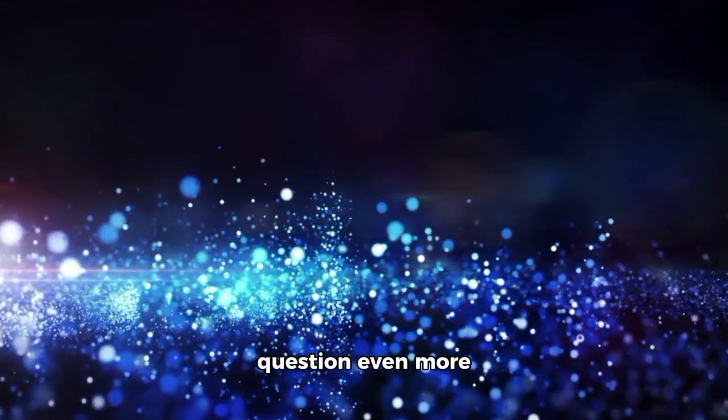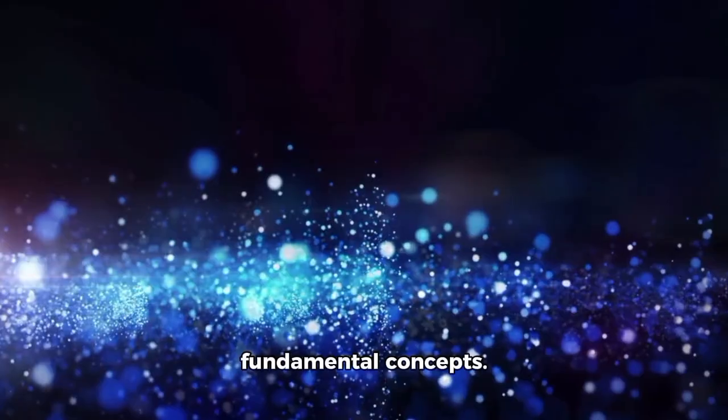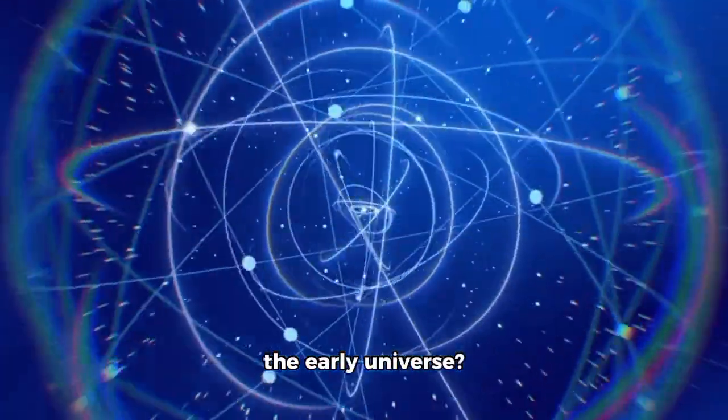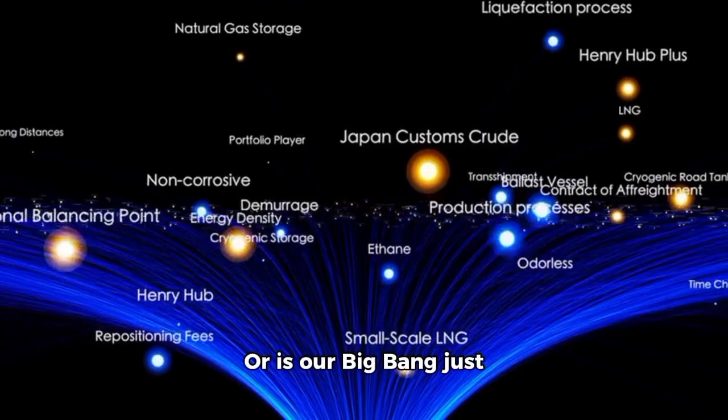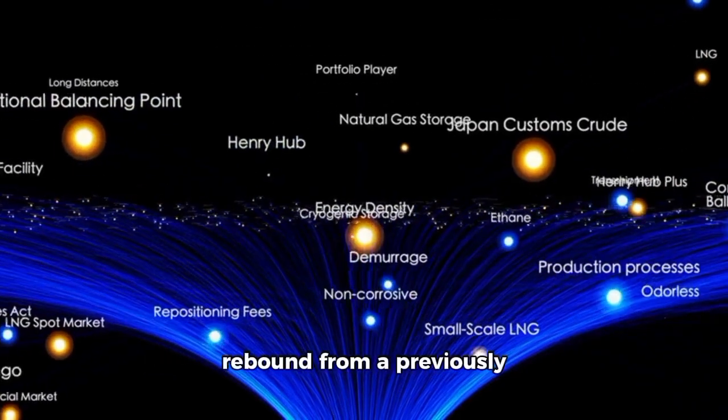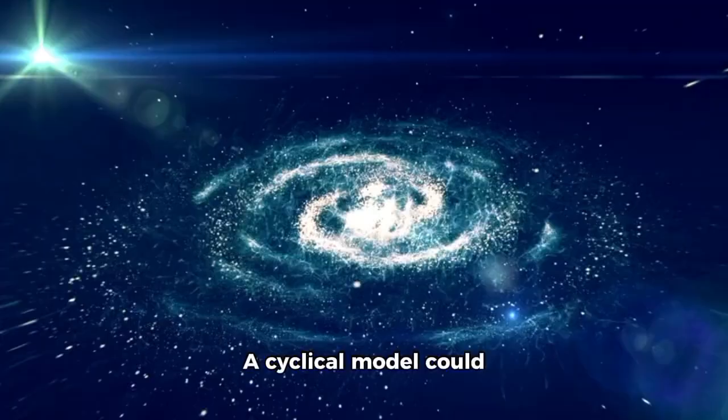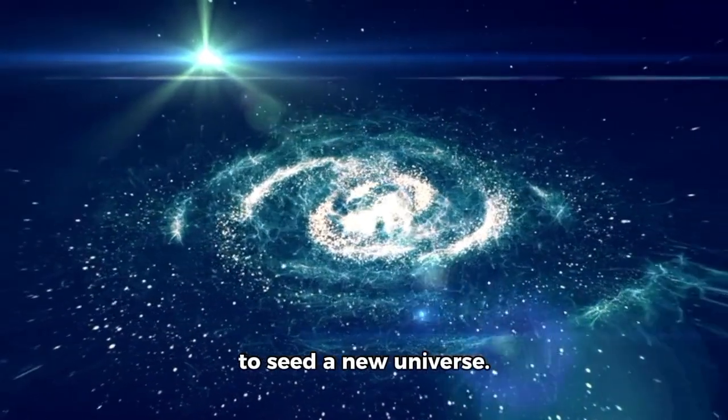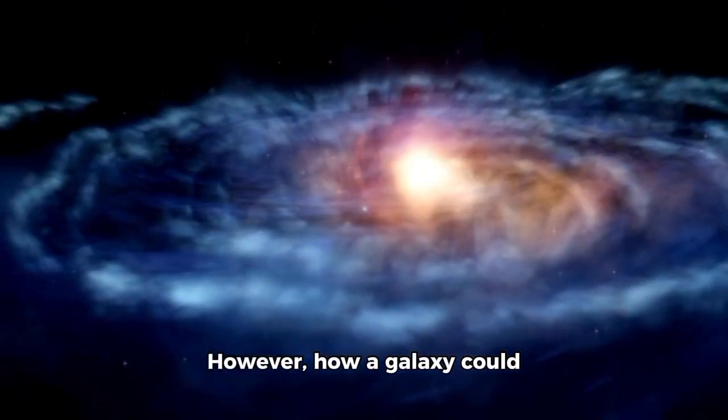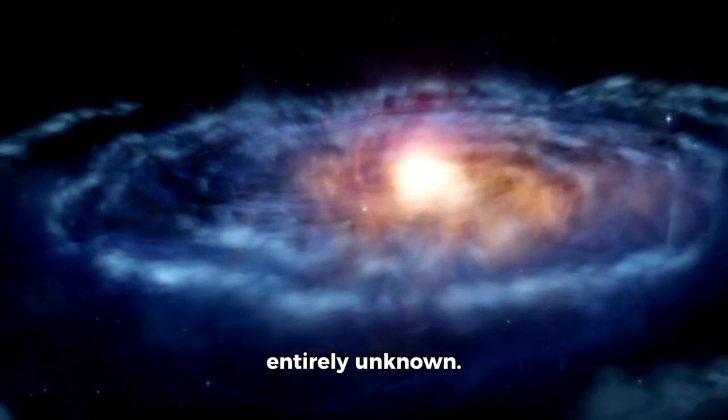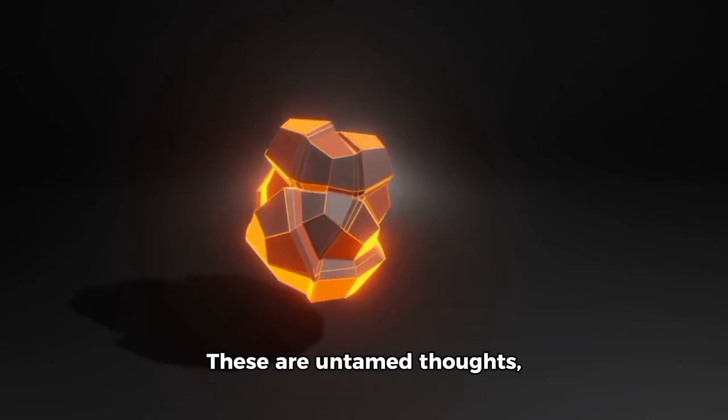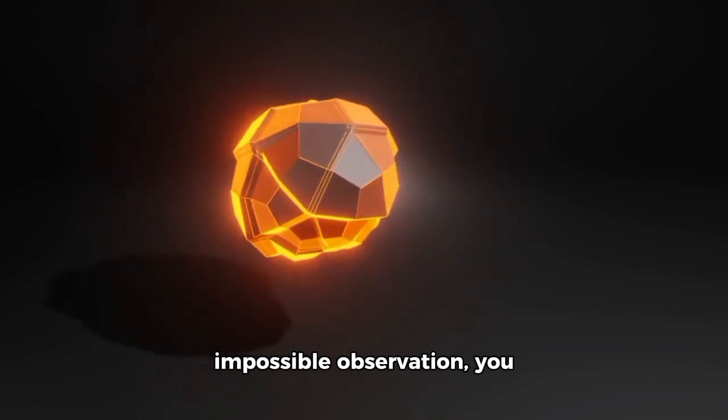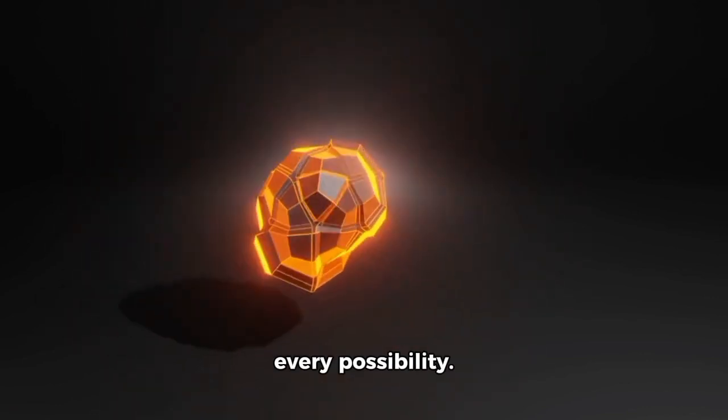Other fringe theories question even more fundamental concepts. Could the laws of physics have been different in the early universe? Or is our Big Bang just part of an endless cycle—a rebound from a previously collapsed universe? A cyclical model could allow ancient structures to seed a new universe. However, how a galaxy could endure that transition is entirely unknown. These are untamed thoughts, but when confronted with an impossible observation, you have to be willing to explore every possibility.